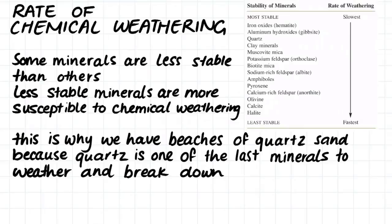The rate of chemical weathering actually depends on the type of mineral that is being weathered. Some minerals are less stable than others, and these less stable minerals are more susceptible to chemical weathering. If we rank the minerals according to how stable they are, we can get an idea of the rate of weathering that they will experience.